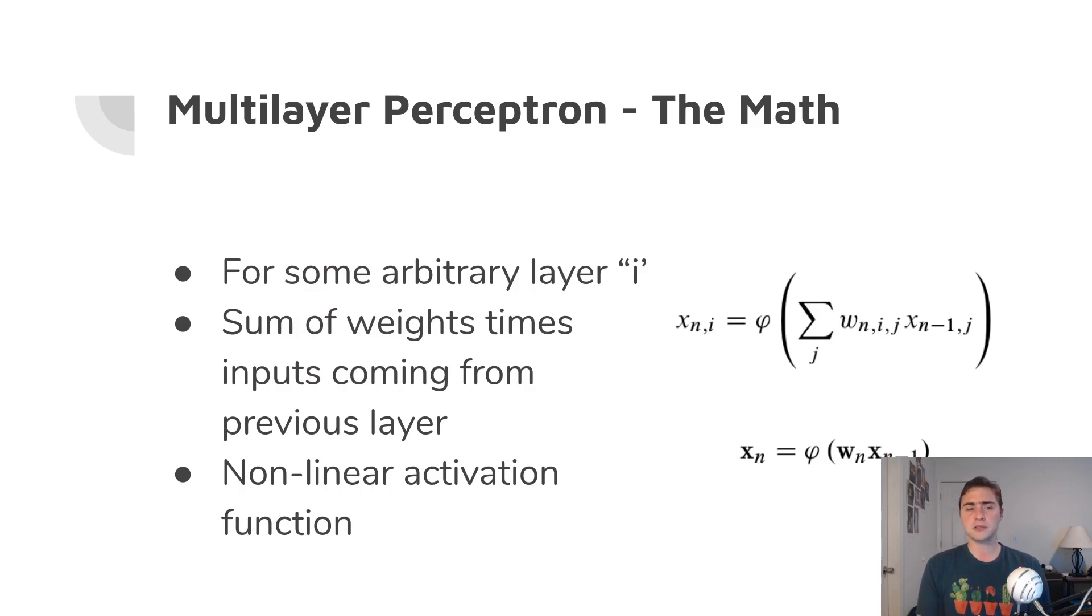We can also decompose this into a more mathematical model. For any of these layers i, we can just think about it as the sum of weights times the inputs coming from the previous layer. Here we have for some layer n, we have our activation function, and then our weights of w_in_i_j, and then our x of n minus one, so our inputs coming from the previous layer, but in the same vertical j. This will be how we can describe mathematically a single layer here. And then, of course, we still have this nonlinear activation function here.